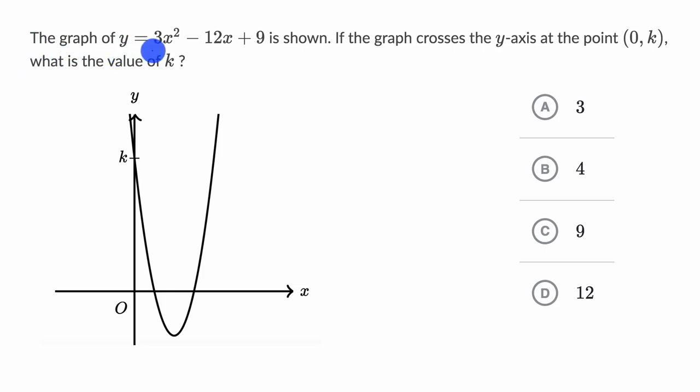We're told the graph of y equals 3x squared minus 12x plus 9 is shown right over here. If the graph crosses the y-axis at the point (0, k), what is the value of k? Pause this video and see if you can work through this.